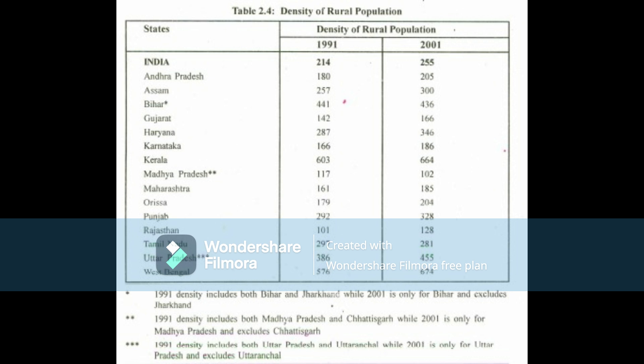2.5 Sex Composition of Rural Population. The most significant aspect of demographic dynamics is the sex ratio. It is an important social indicator used to measure the extent of prevailing equity between males and females in a society. It is an outcome mainly of the interplay of sex differentials in mortality, sex-selective migration, sex ratio at birth, and sex differential in population enumeration. According to the 2001 census, the sex ratio in India stands at 933 females per 1,000 males, an improvement of 6 points over 927 recorded in the 1991 census. Though it has been improving since 1901, it continues to be the lowest in the world.